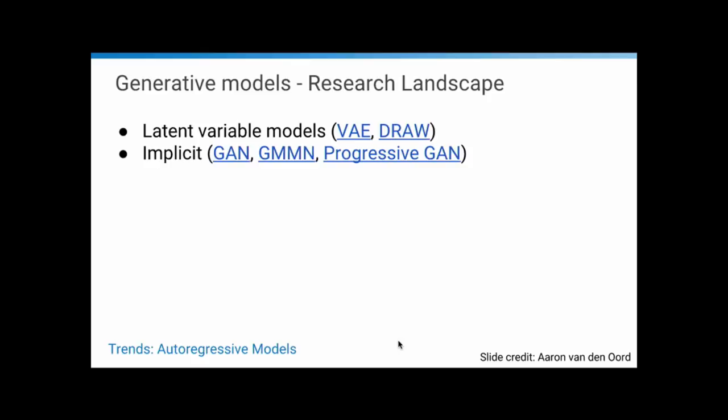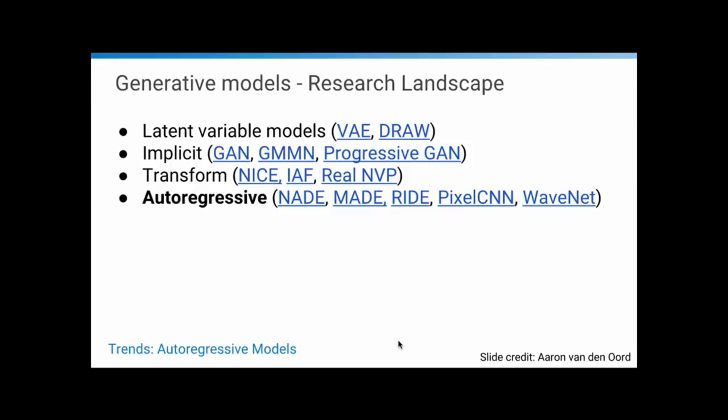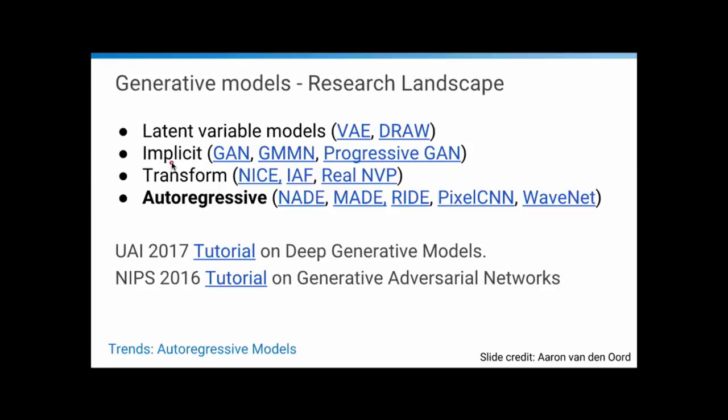I'll talk about autoregressive models. First, where they fit in the landscape of generative models. There are latent variable models like VAEs and variants like DRAW. There are implicit models like GANs that generate samples but don't give likelihoods. There are models that learn invertible transformations from simple distributions to images. And there are many kinds of autoregressive models. There's been a good tutorial at IUI on deep generative models covering the first three in detail, and a NIPS GANs tutorial from last year. I'll also discuss GANs more in the domain alignment section, but here I'll focus on autoregressive models.